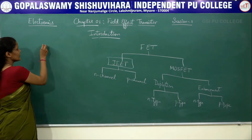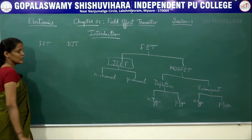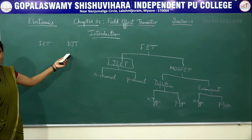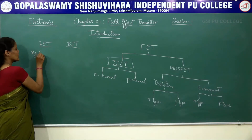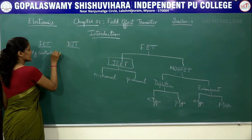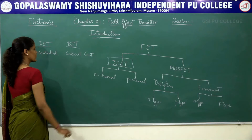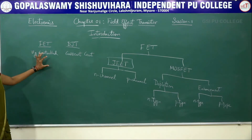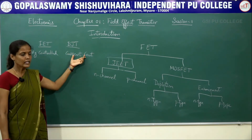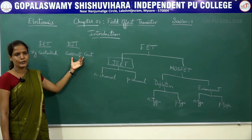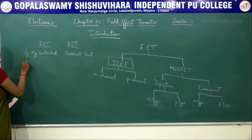Let us try to understand the difference between FET and BJT. BJT, in the sense bipolar junction transistor, which we had already studied in our first year. FET is a voltage controlled device whereas BJT is a current controlled device. In a voltage controlled device, the output current can be controlled by varying the input voltage. In a current controlled device, the output current can be controlled by varying the input current.